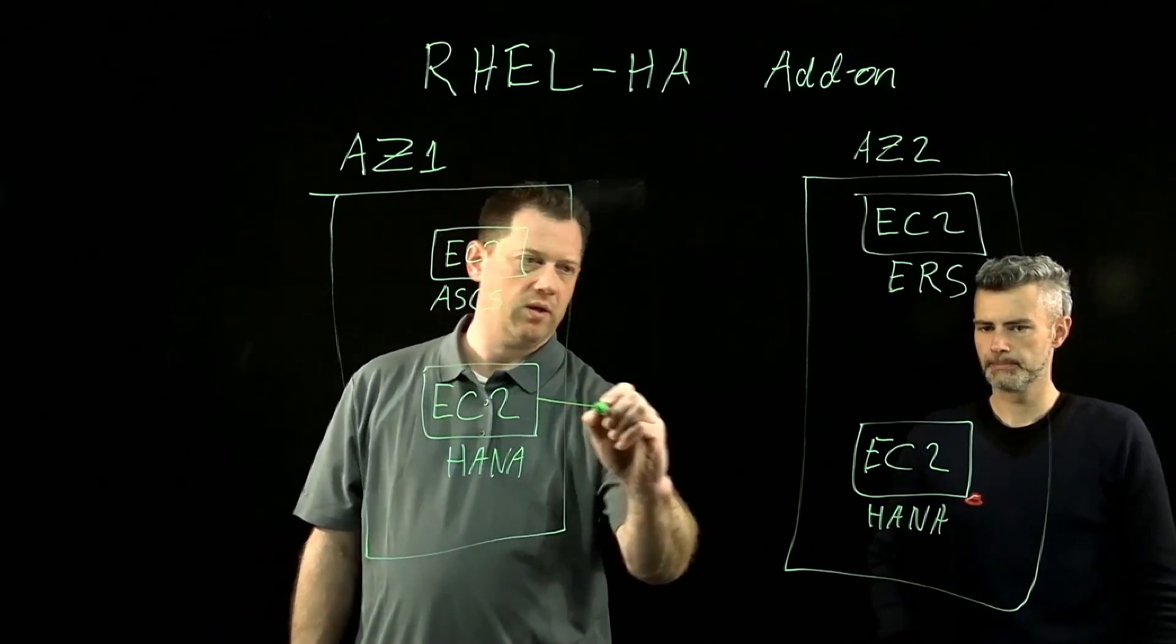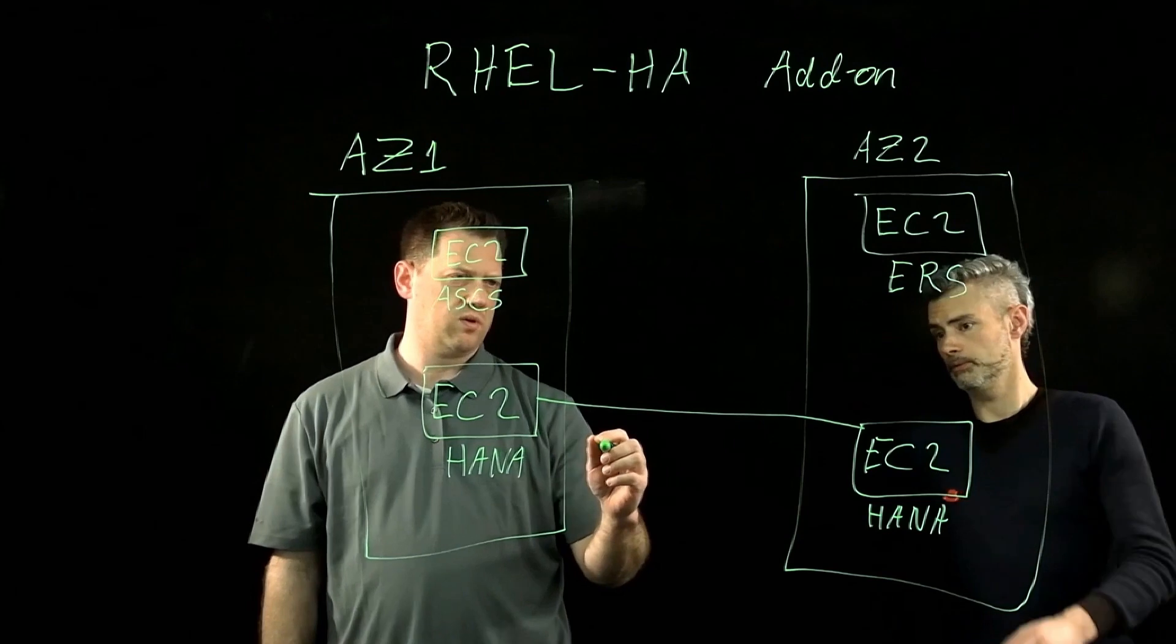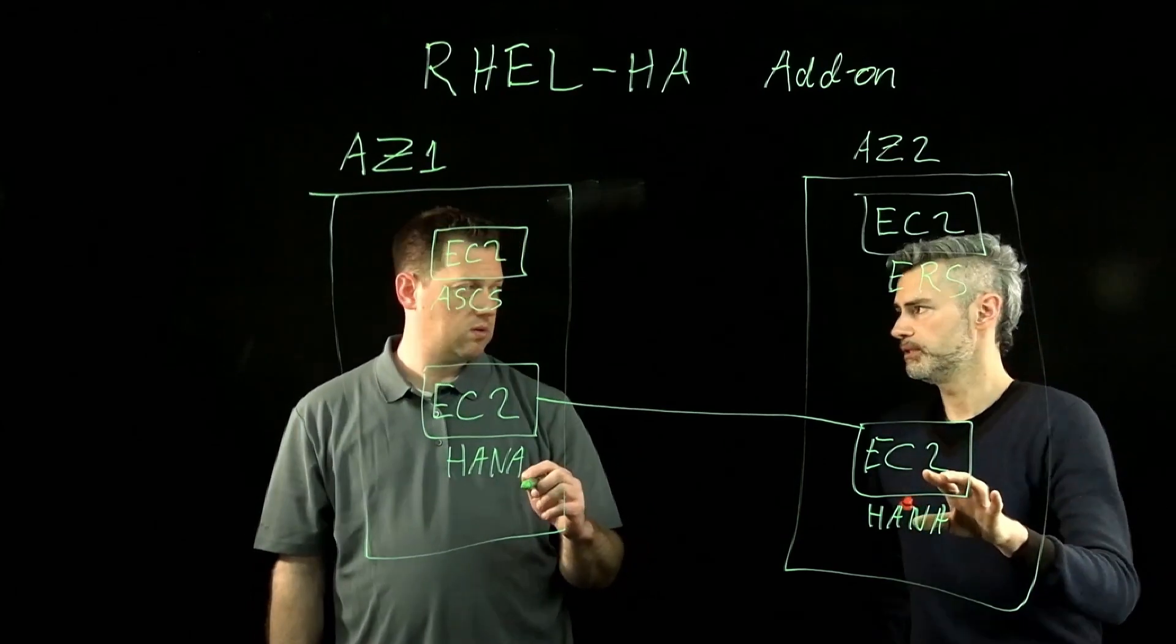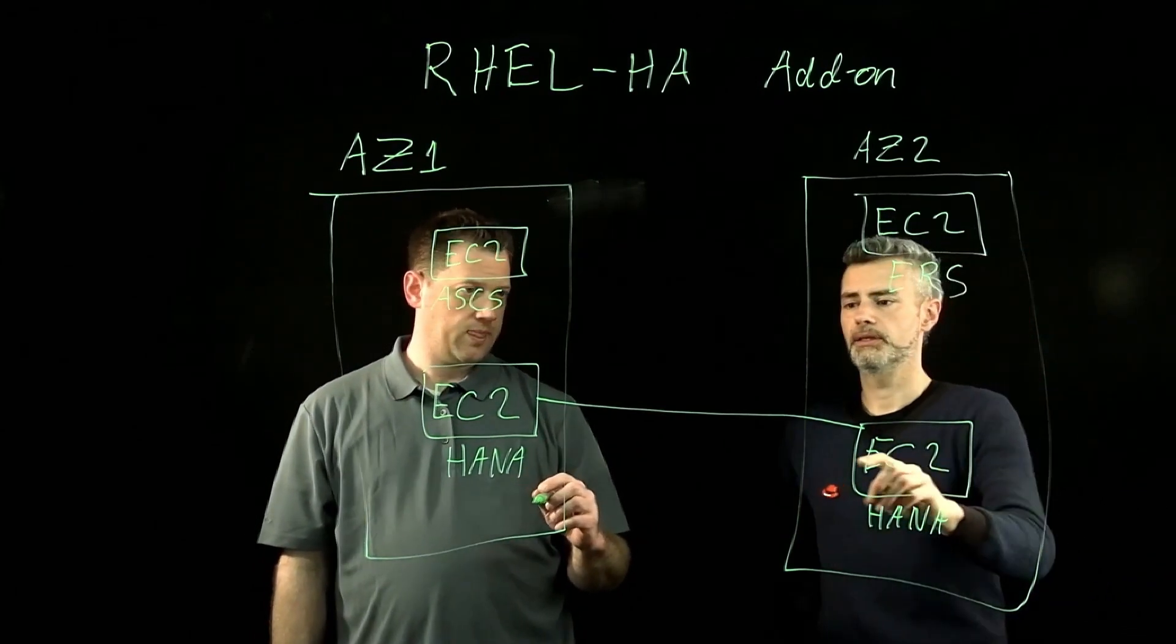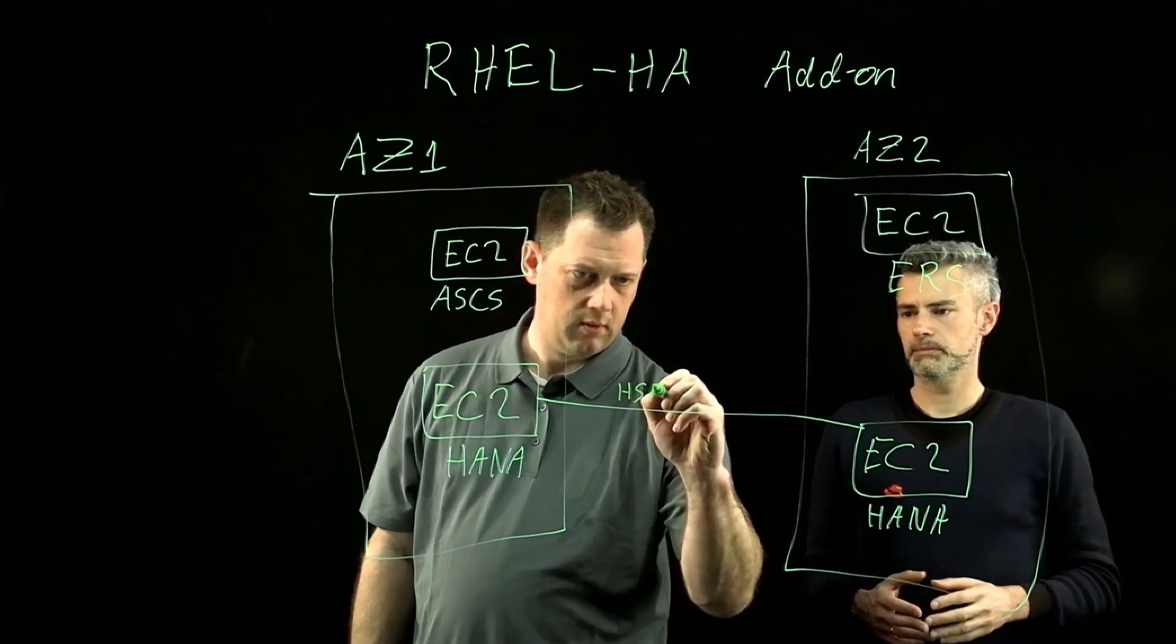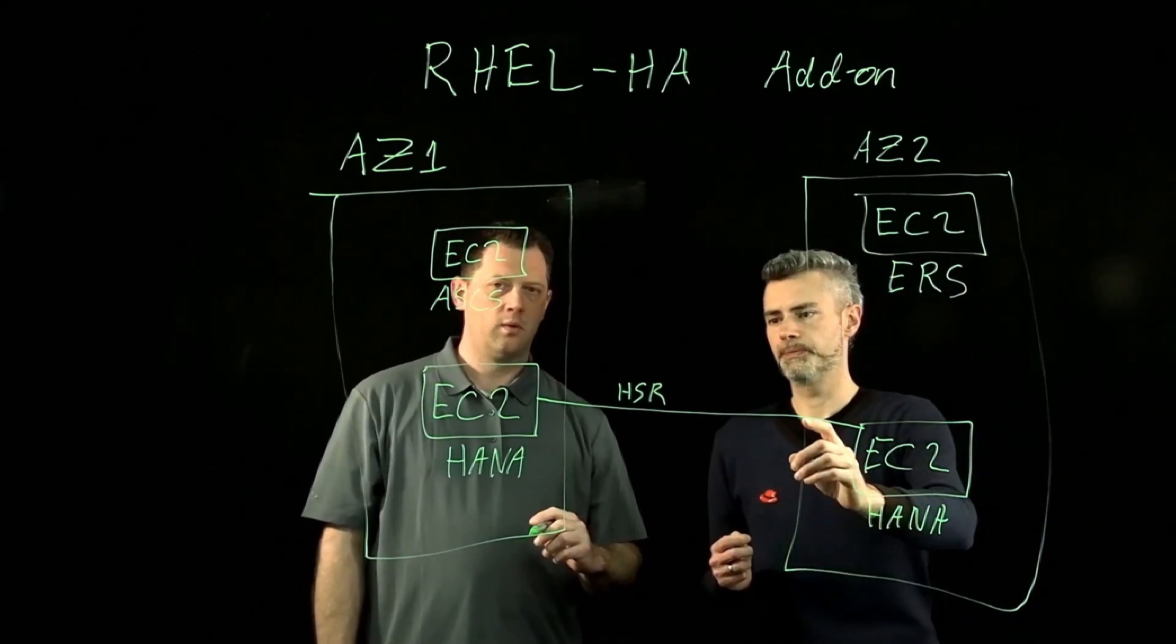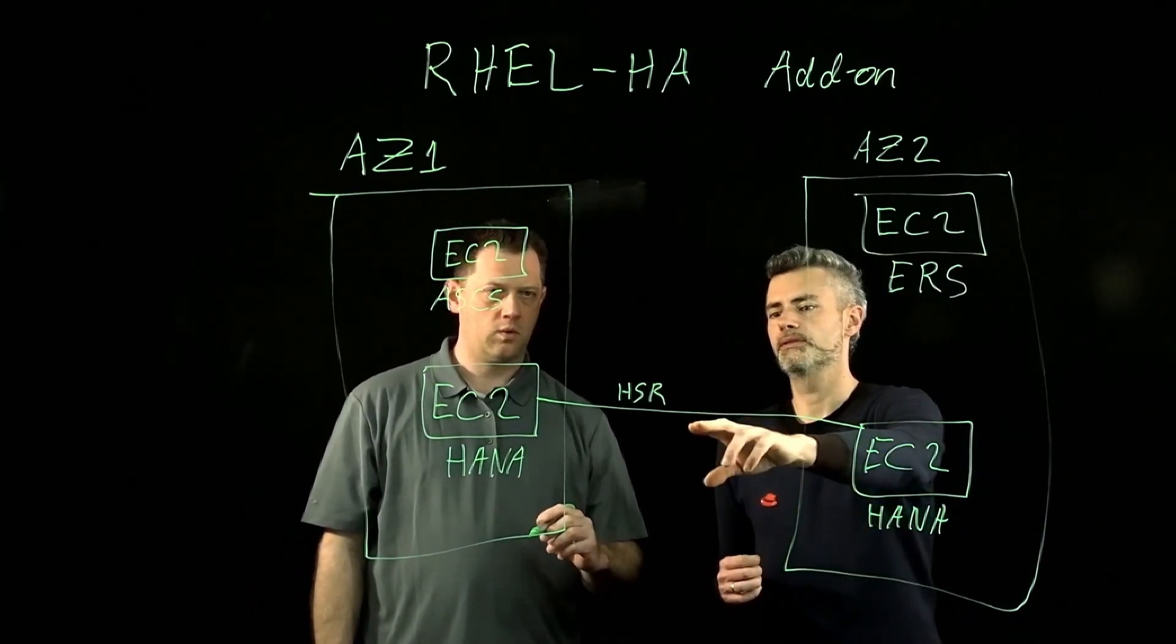And these are tied together with a couple different things, right? Well, so the native high availability feature of SAP HANA is HANA system replication, HSR. That, as I just said, is a high availability feature.